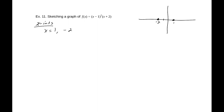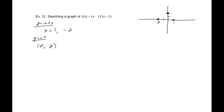We also have a y-intercept at the point (0, 2). Plugging in 0: that's (-1)² = 1, times 2, equals 2. Now if you notice, this is actually a polynomial — it's a cubic — so we can make a guess on the end behavior.